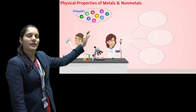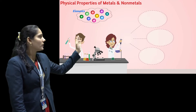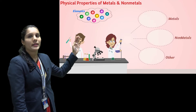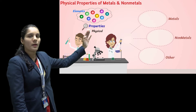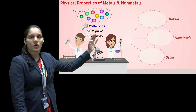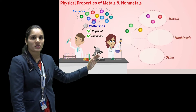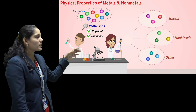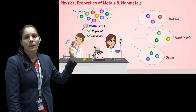Here I have an element. How can we differentiate it? With the help of their physical and chemical properties, we can classify things into metals, non-metals, and other elements. Now, let's move towards the first property of metals.